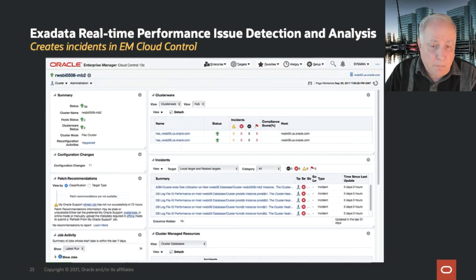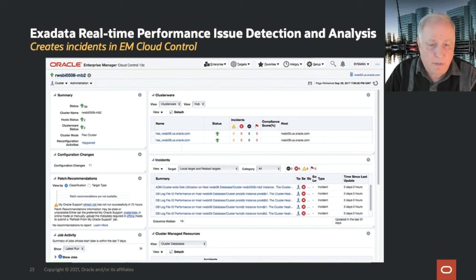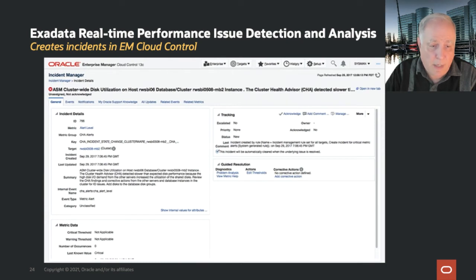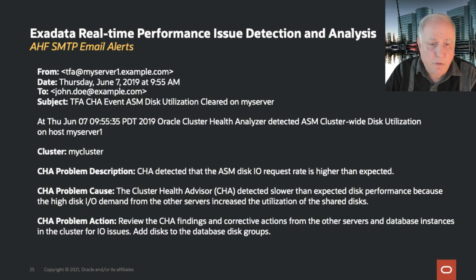When you move to EM, you can see these alerts coming through on the cluster page as incidents — both database alerts and node alerts that you can drill down on to see the details and nature of the alert. In this case it's an ASM disk problem with slow IO. If you aren't using EM, you can get email notifications through TFA configured with SMTP, providing the same information that would be sent to EM.